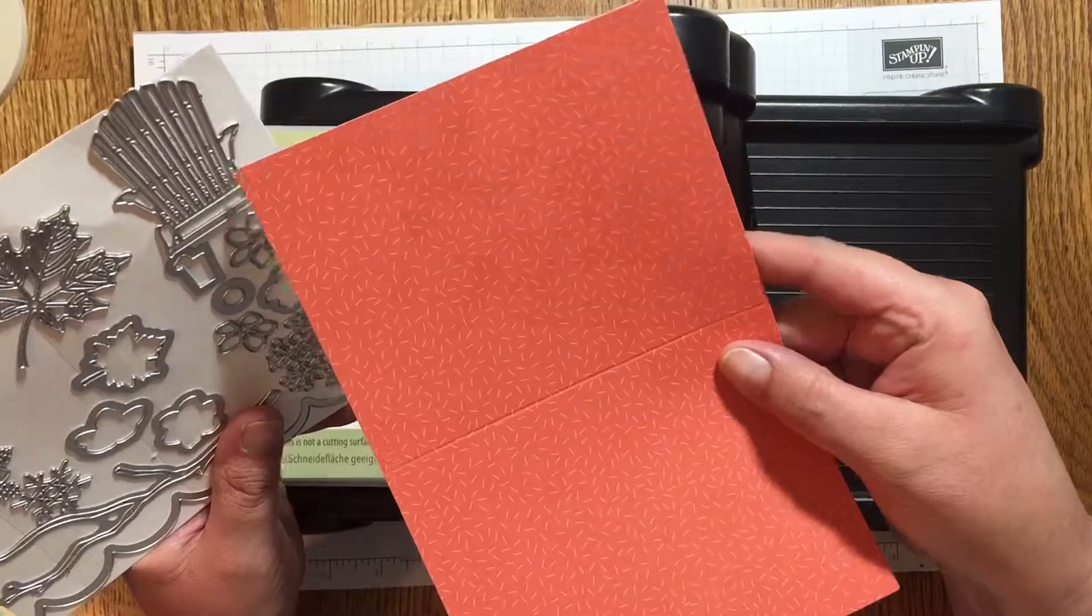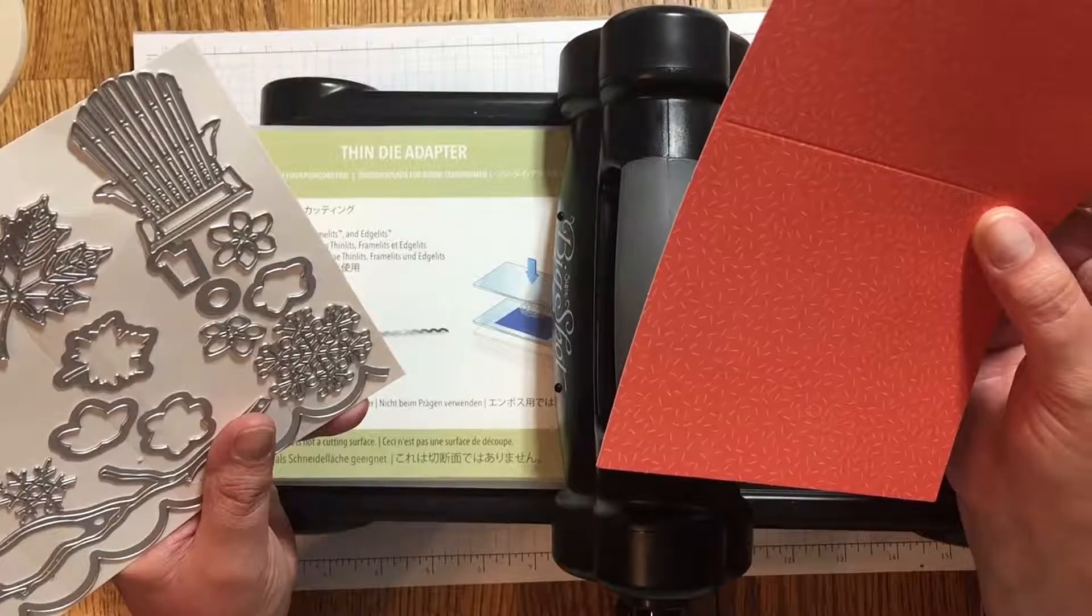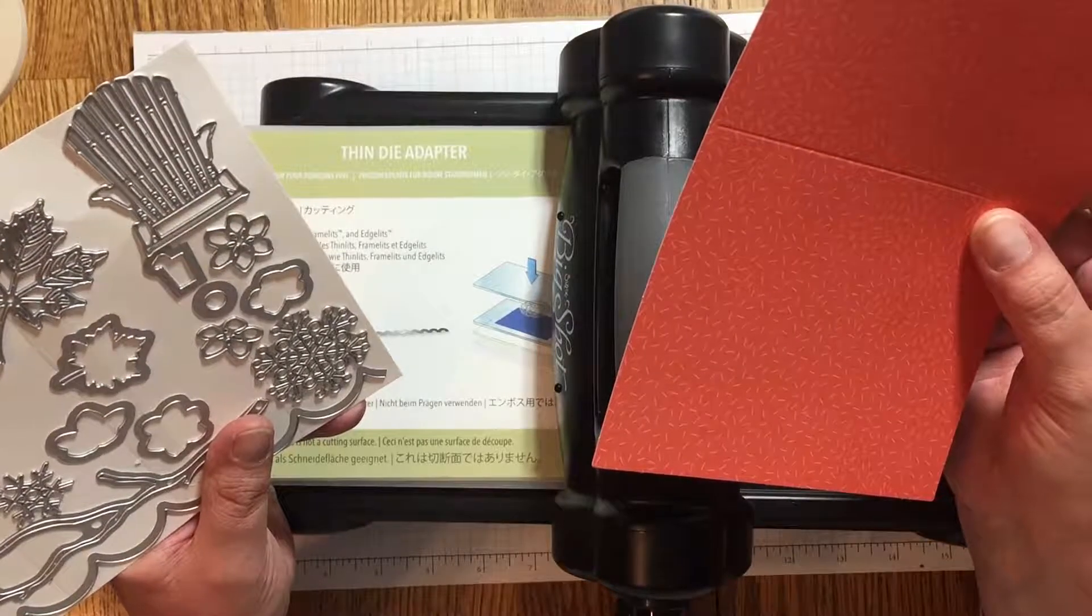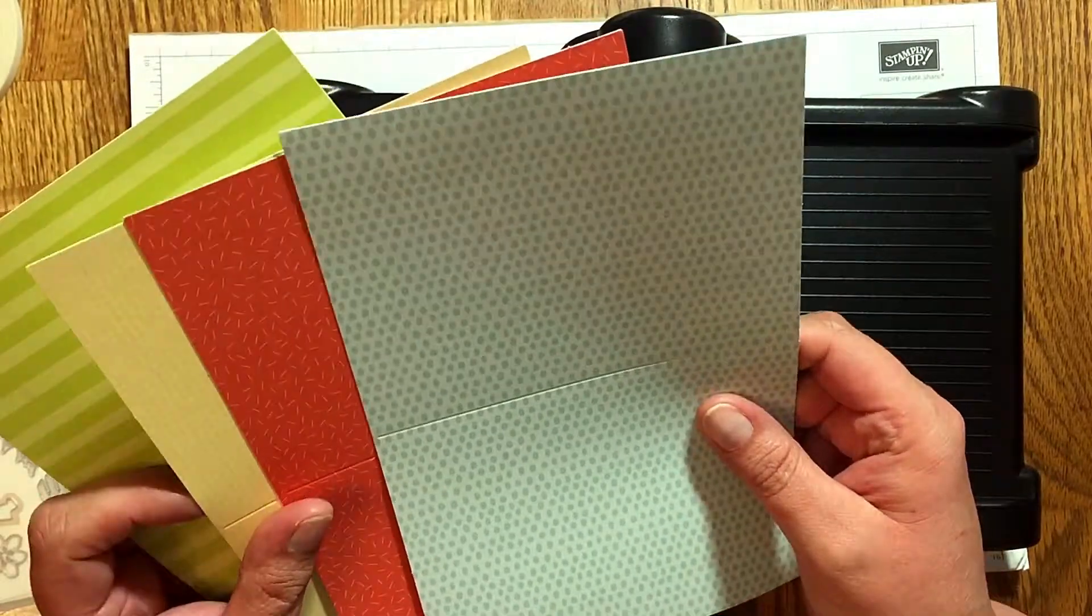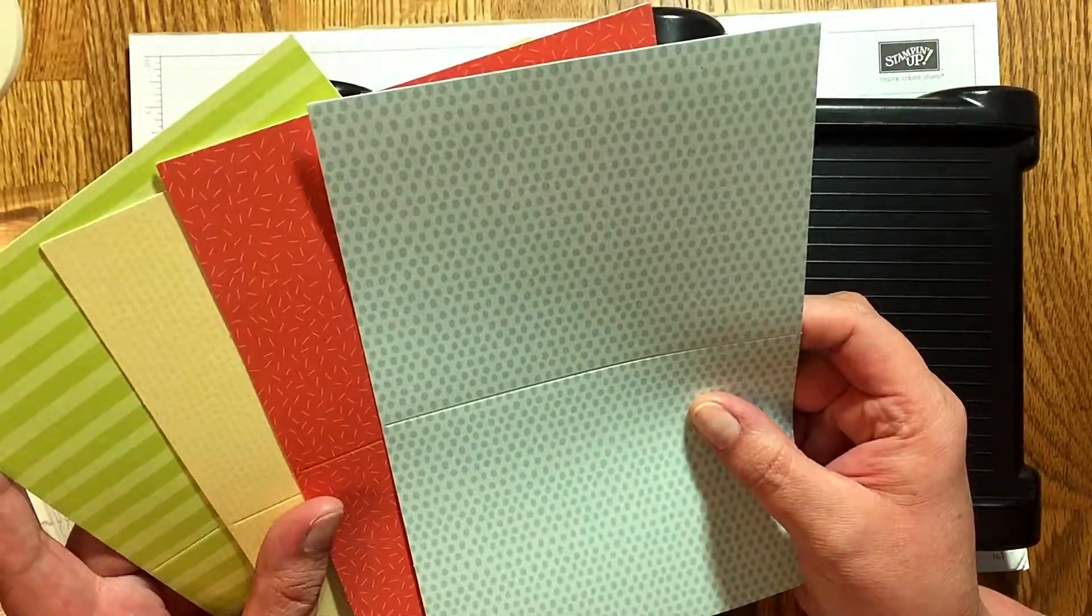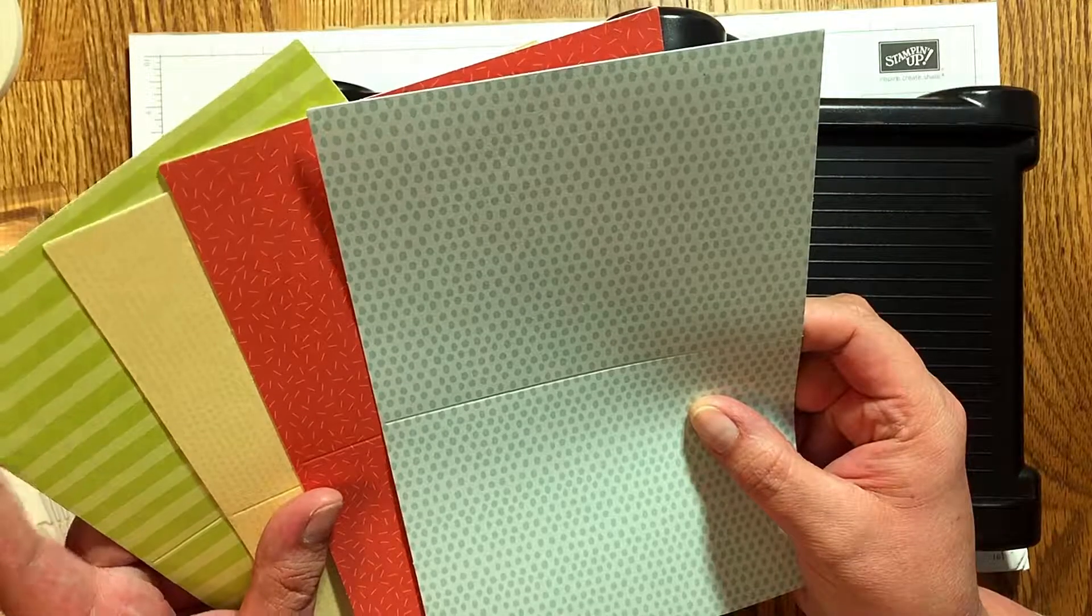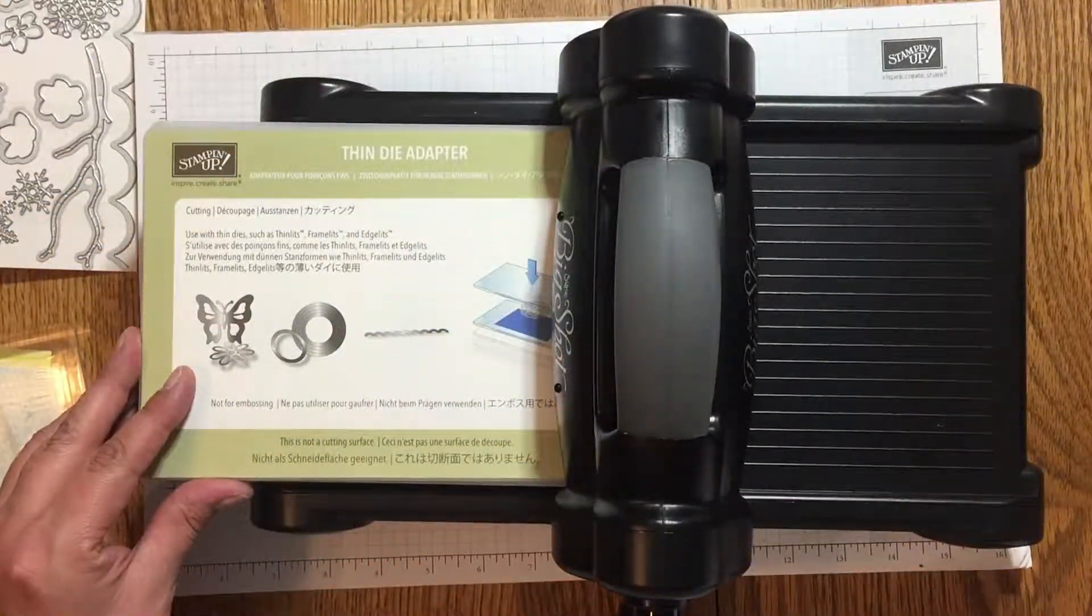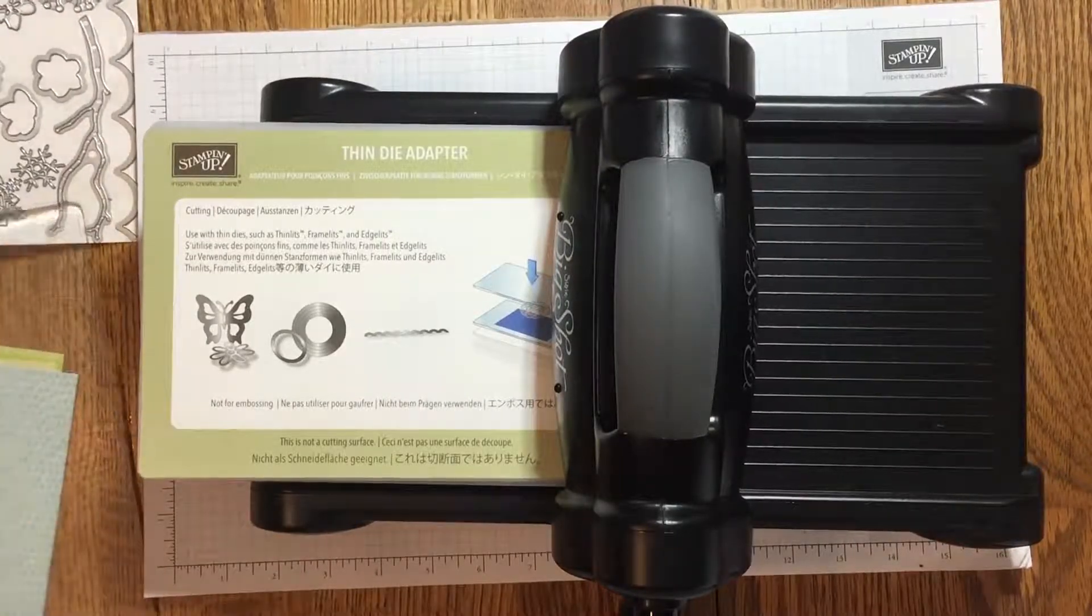The first thing you need to do to make this Easter basket is cut four of the lawn chair dies from cardstock or designer paper with your big shot or other die cutting machine. I've been using the pre-made cards from the Tutti Frutti cards and envelopes set to make my baskets, and I'll make one in Calypso Coral today. Since the lawn chair die is an intricate die, you'll want to use your thin die adapter with your big shot cutting machine.